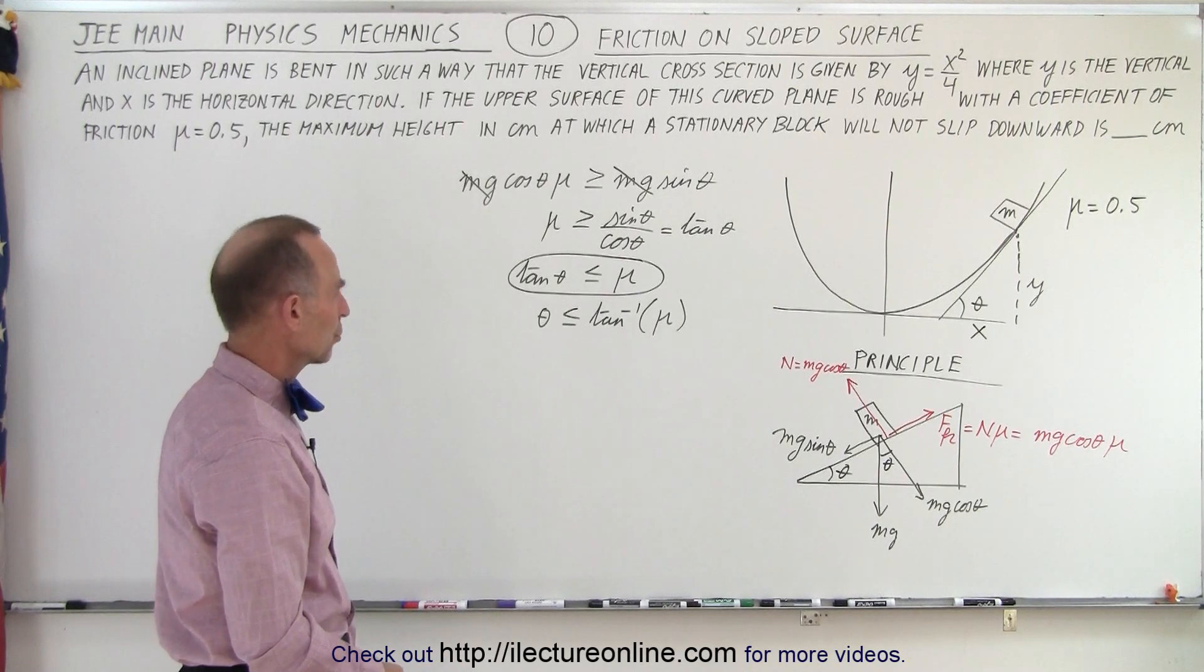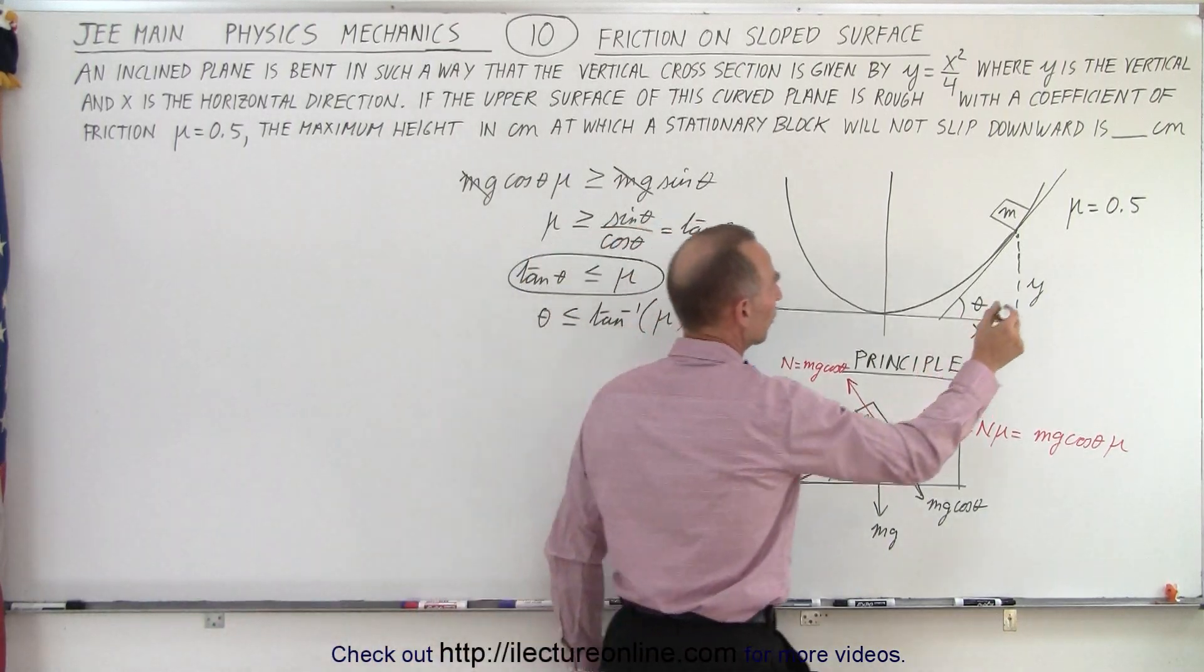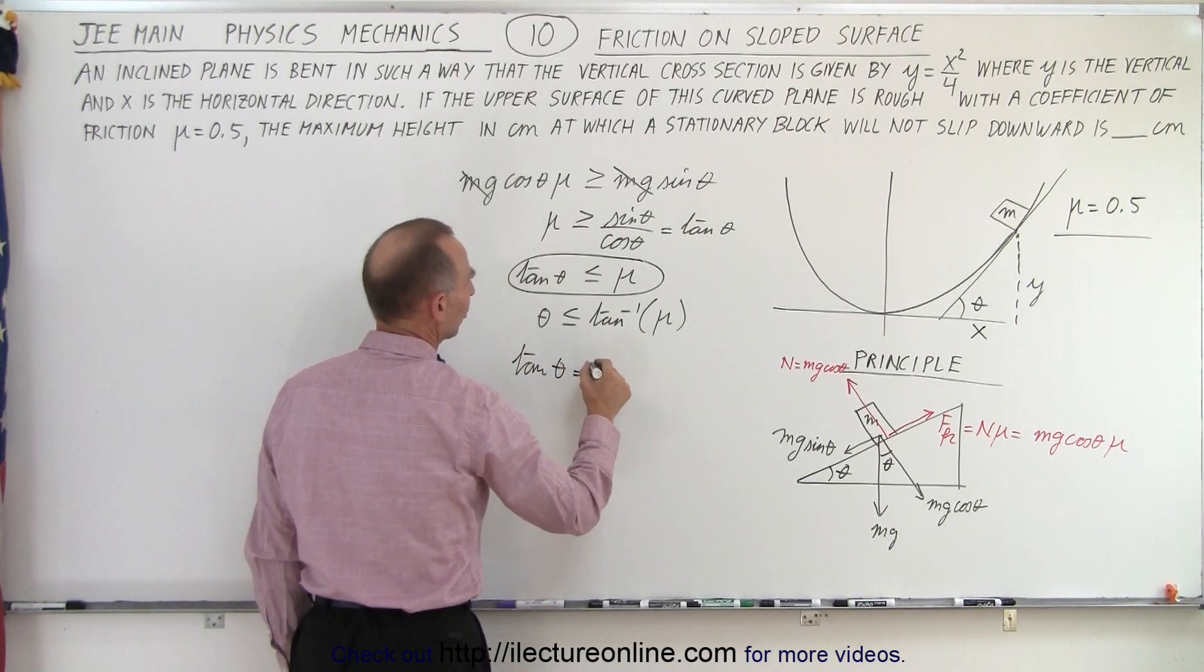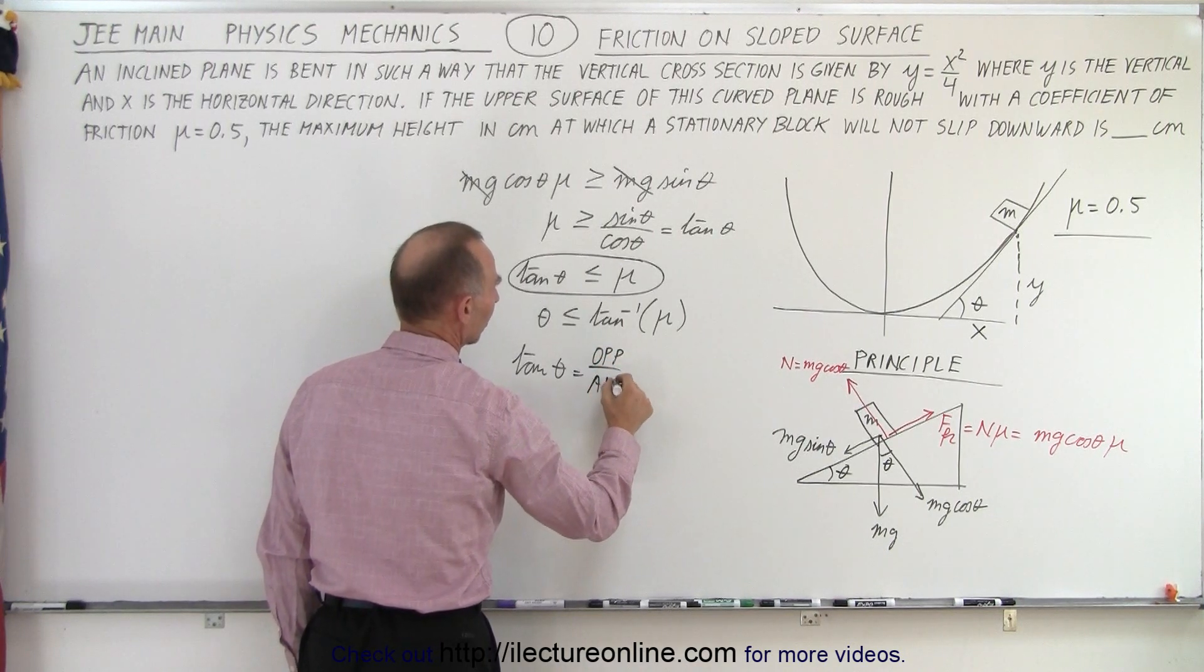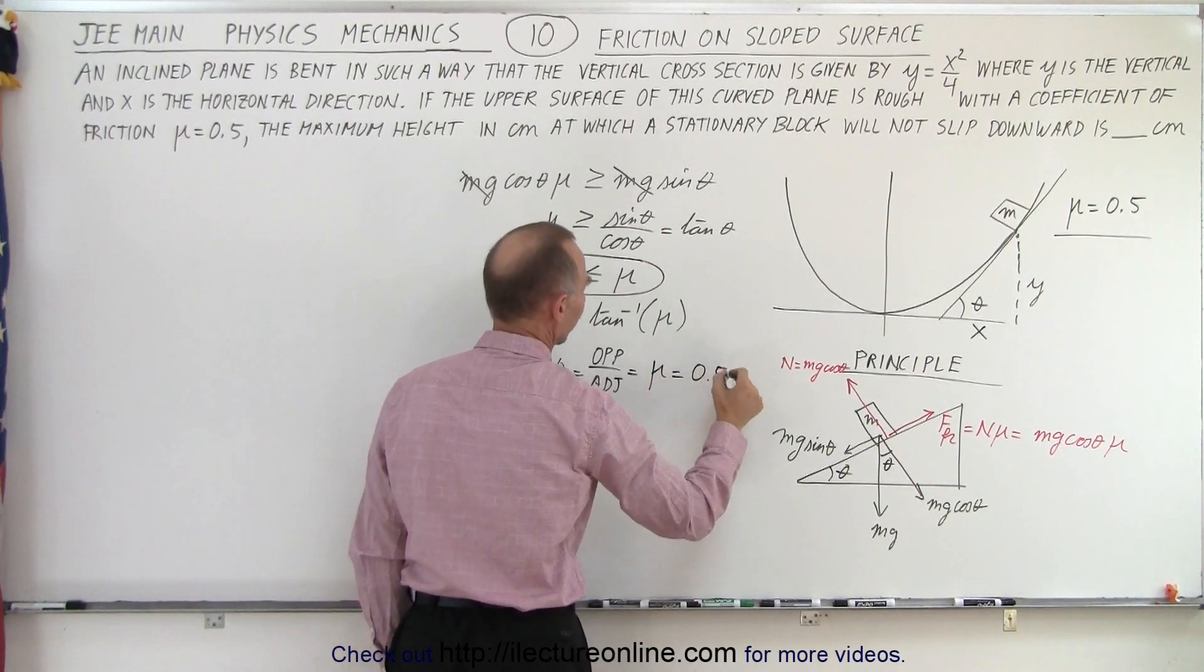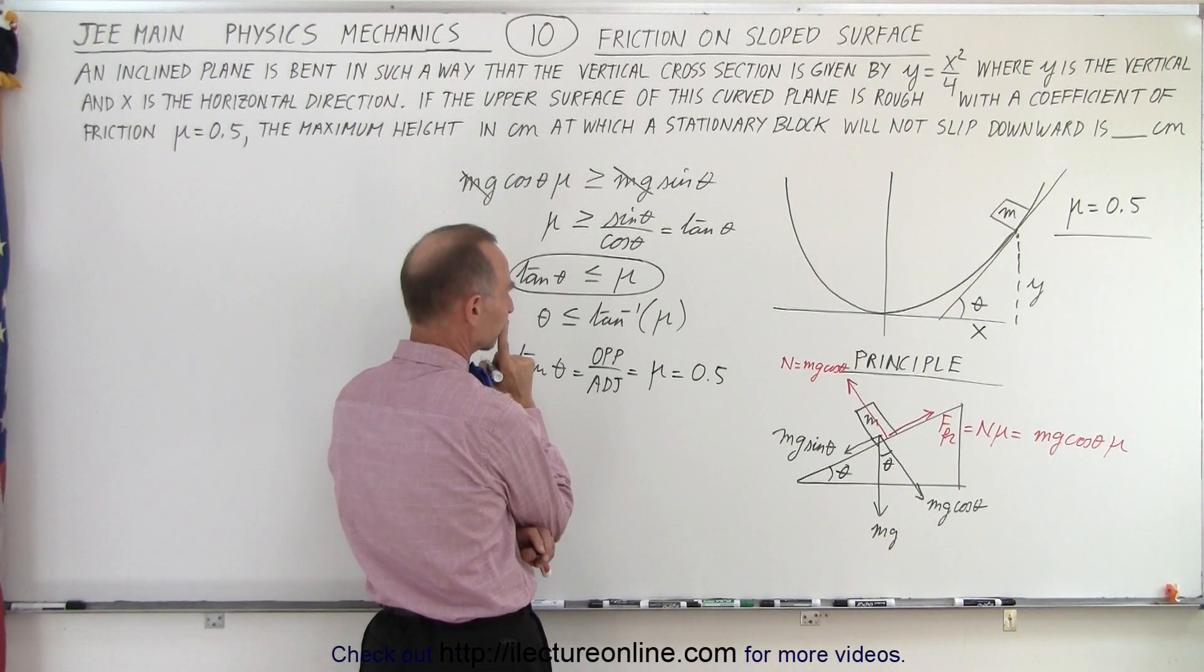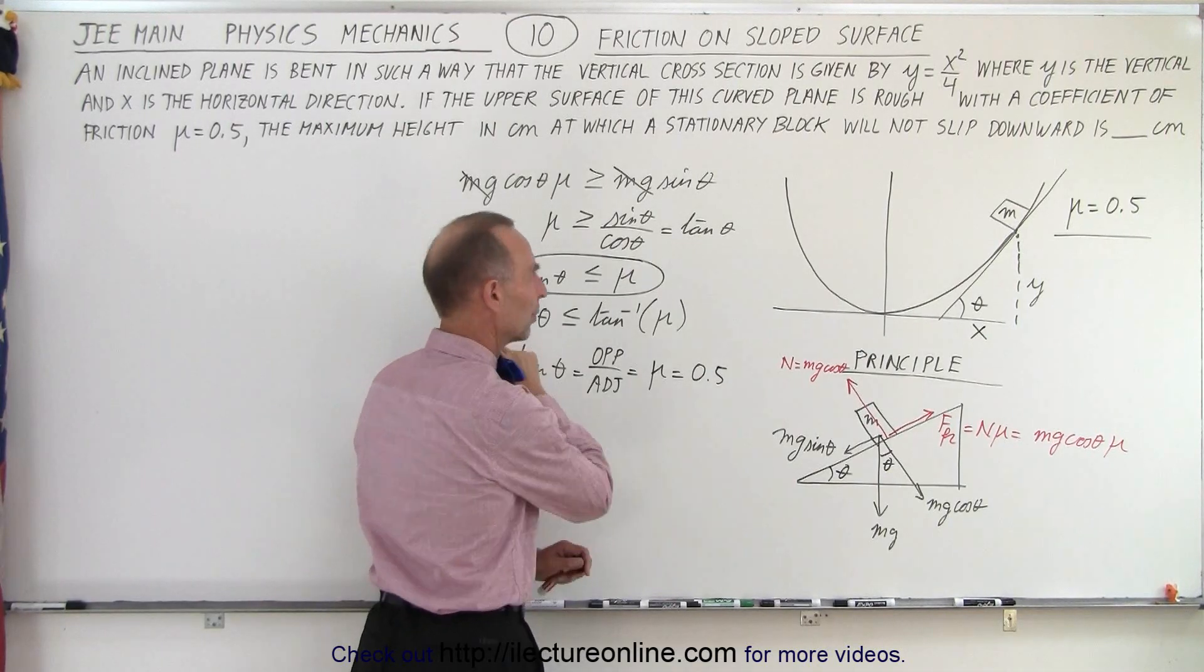Ah, we're given mu. Since we're given mu, this is a given quantity, we should be able to find the angle. So we can say that the tangent of theta, which by definition is opposite over adjacent, which is equal to mu, which is equal to 0.5. So now we know that the opposite over adjacent is equal to 0.5.